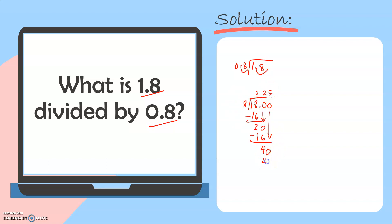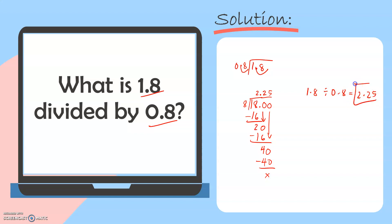40 divided by 8 is 5, and 5 times 8 is 40. 40 minus 40 is 0. Since there's no more remainder, we will no longer add 0 in our dividend. For the final step, we copy this decimal point in our quotient. So we will have 1.8 divided by 0.8 is equal to 2.25.